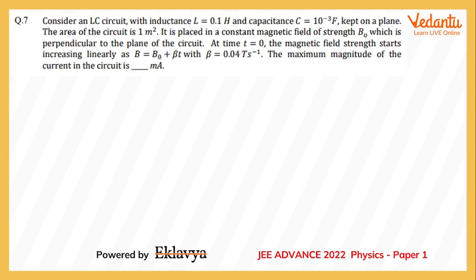Hello friends, we are now discussing question number 7 of JEE 2022 Advance Paper 1 Physics section. This question says that we have an inductor and a capacitor and these two are part of a circuit. The area of the circuit is 1 meter square. So I'll first write the information given to us: L is given to be 0.1 Henry, C is given as 10 to the power minus 3 Farad.